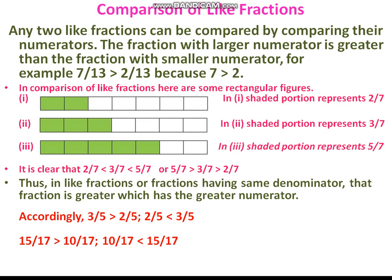Next is the comparison of like fractions — fractions which have the same denominator. Any two like fractions can be compared by comparing their numerators. The fraction with the larger numerator is greater than the fraction with the smaller numerator. For example, 7 by 13 is greater than 2 by 13. Here the denominator is the same (13), so we compare the numerators: 7 is greater than 2, therefore 7 by 13 is greater than 2 by 13.